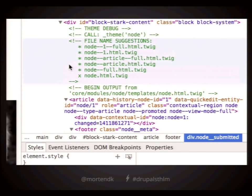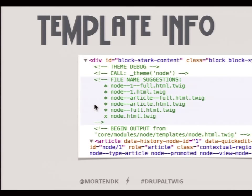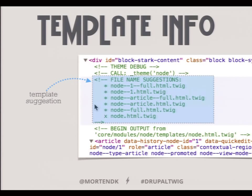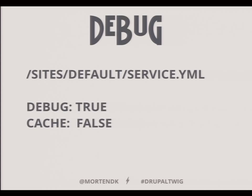What is this? It explains to me where stuff comes from. File name suggestions — these are the file names you can use to override this part of the template. You don't know where that template came from? Boom — core modules, node, templates, node.html.twig. This is how you figure out where stuff comes from in Drupal. That thing where you sit and hate life for a week because you can't figure out where something comes from — those days are now over.